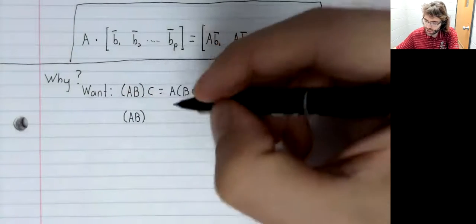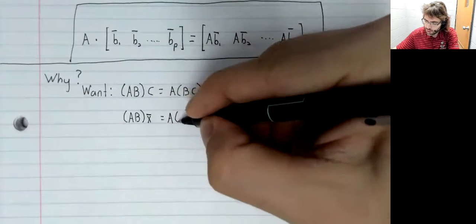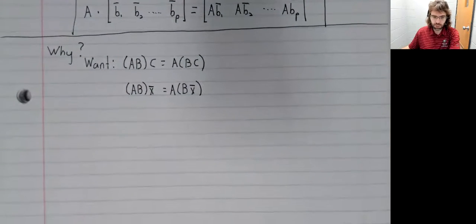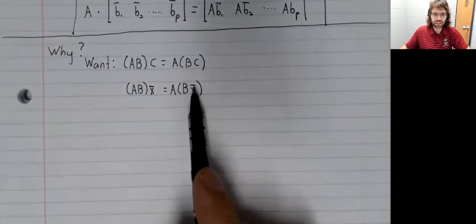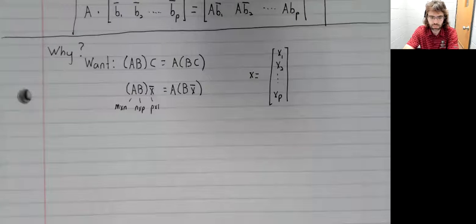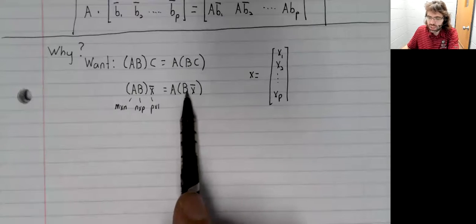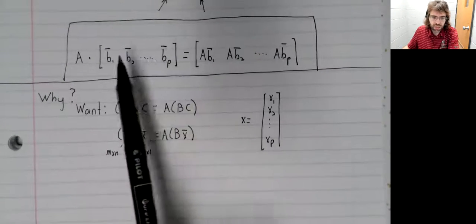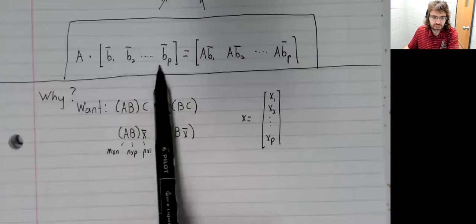Let's look at this thing that we want in the special case where one of these matrices has only one column. So in the special case where this matrix here is a column vector. Let's just look at the right hand side of this equality because B times X is defined. We know what B times X is.